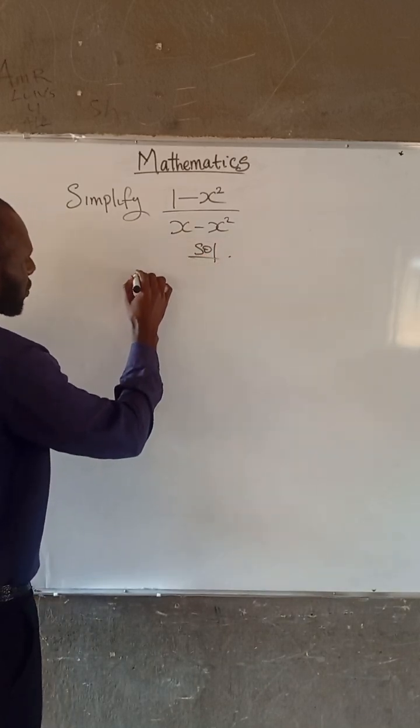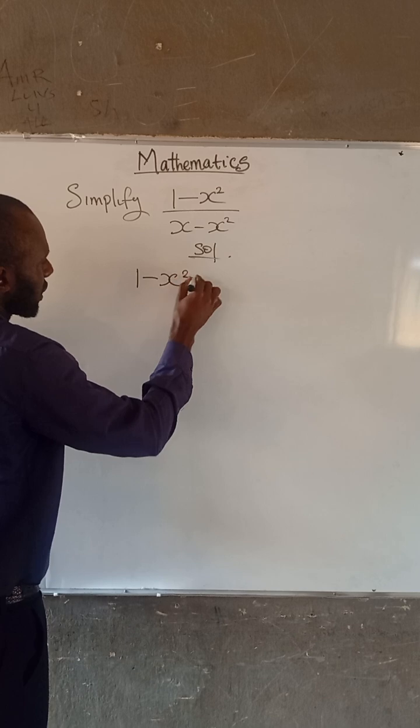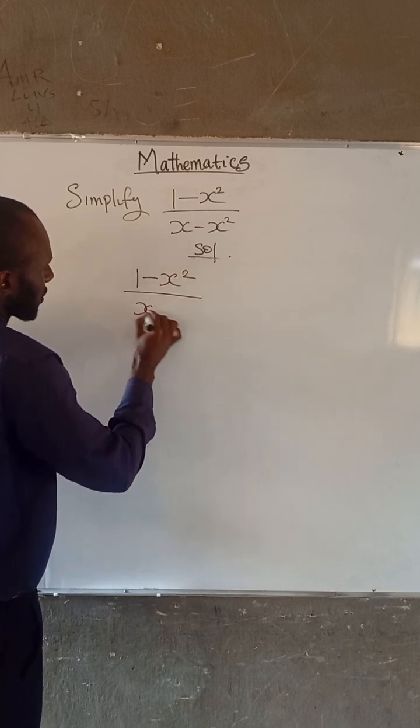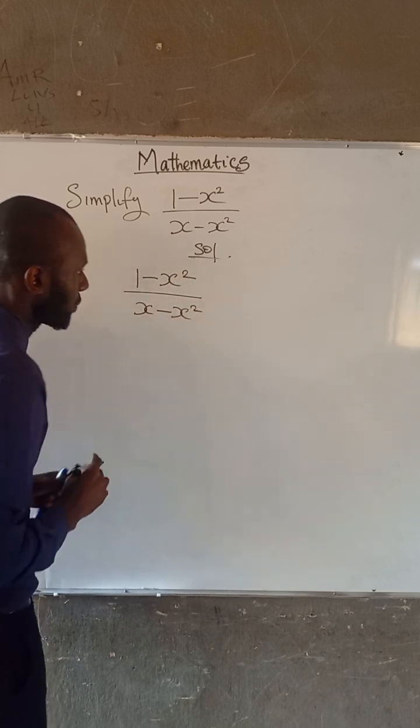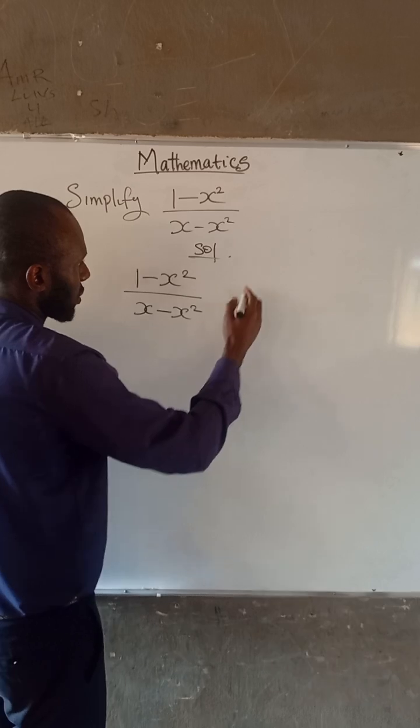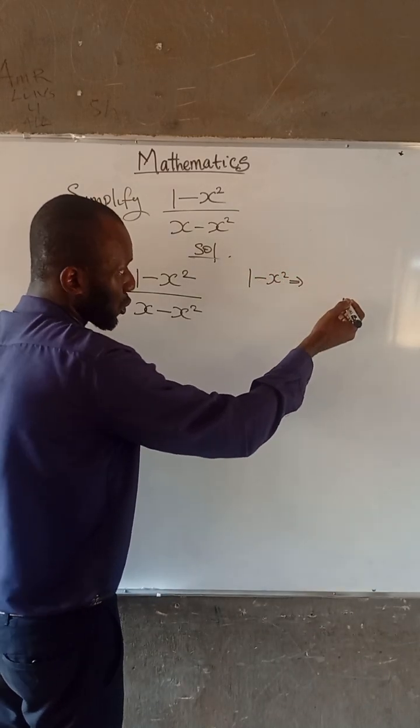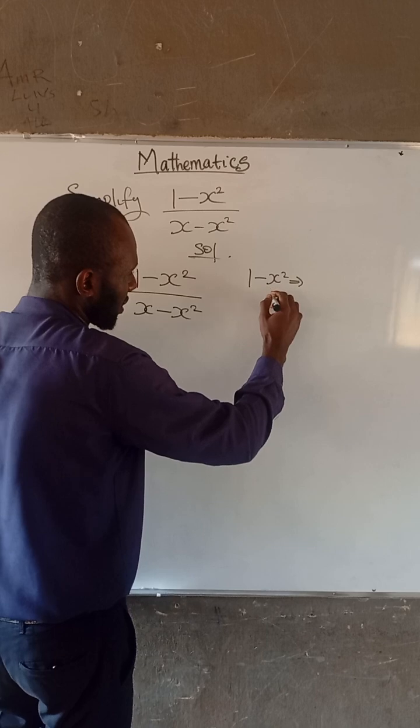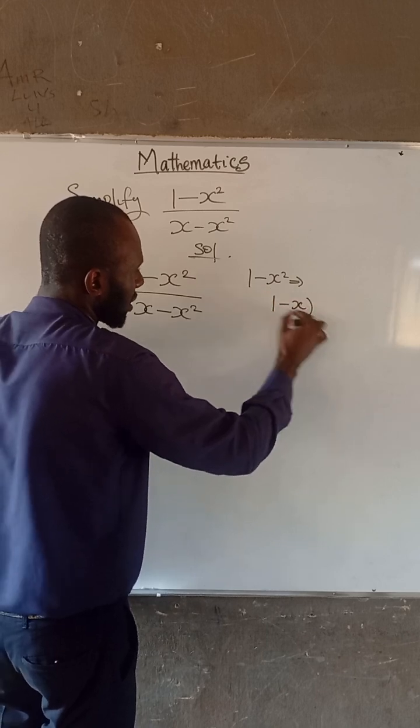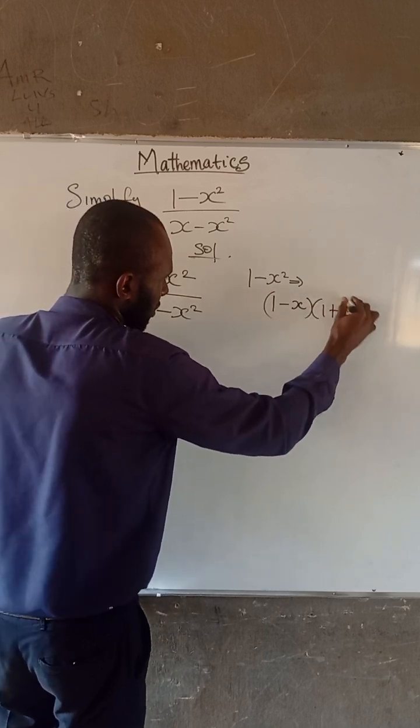At this point we have that 1 minus x squared divided by x minus x squared. Now note that 1 minus x squared is the difference of 2 squared. And it can be expressed as 1 minus x multiplied by 1 plus x.